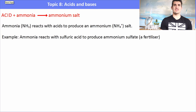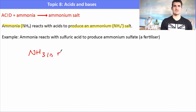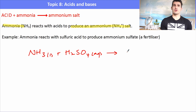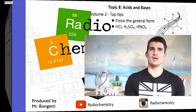The last reaction type is acid reacting with ammonia. Ammonia reacts to form an ammonium salt, NH₄⁺, which then combines with the anion from the acid. For example, ammonia NH₃ reacted with sulfuric acid H₂SO₄ produces ammonium sulfate, which is actually a fertilizer. We balance this carefully: two ammonium ions to one sulfate, so we need 2NH₃ on the left-hand side.